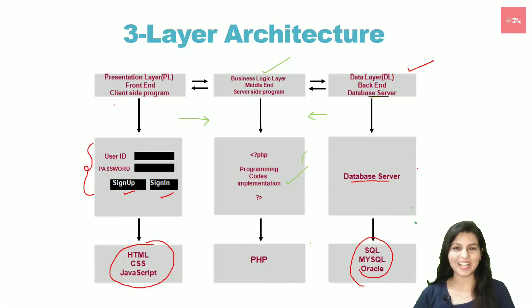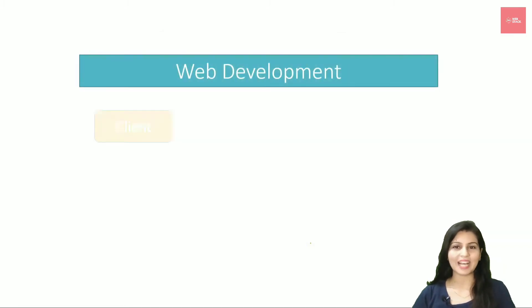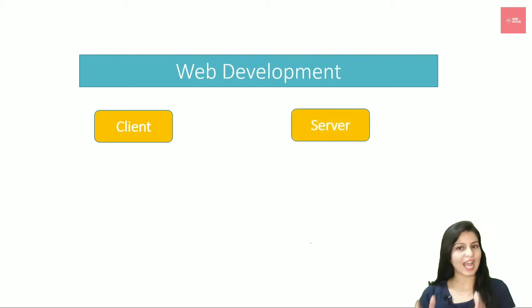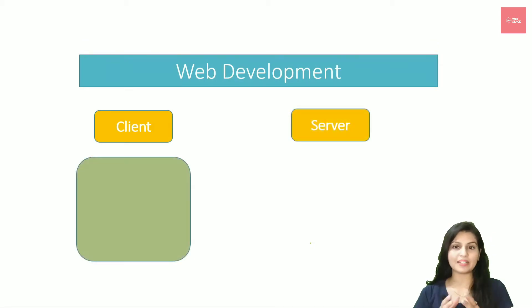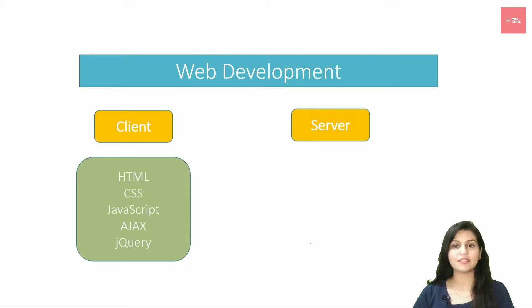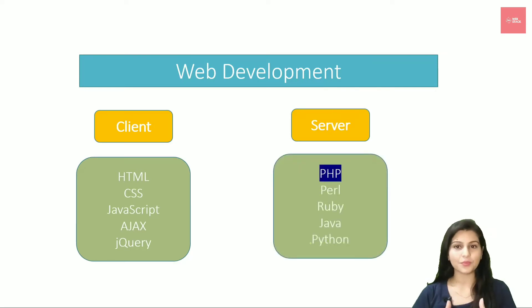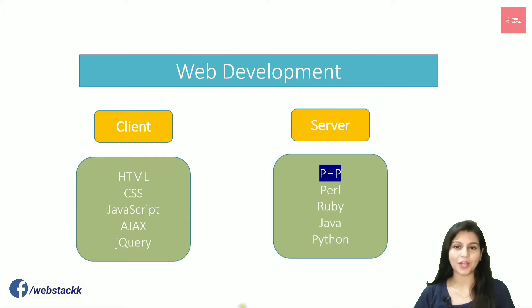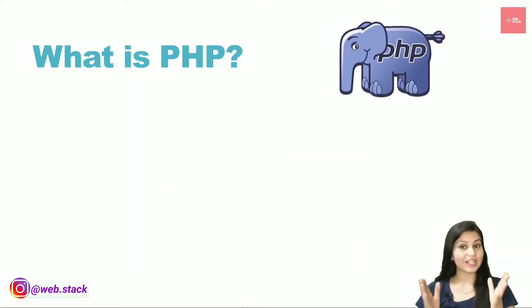To sum up web development: we have client and server, and languages for the web are divided into these two parts. Client side contains HTML, CSS, JavaScript, AJAX, and jQuery. Server side languages include PHP, Perl, Ruby, Python, Java, and so on. This constitutes your web development.